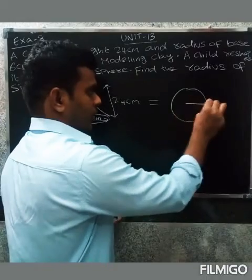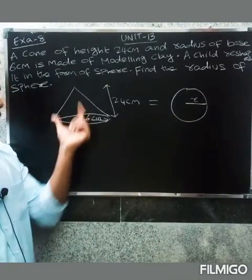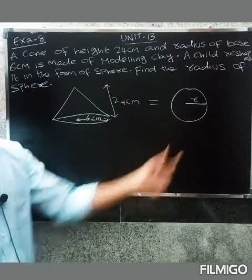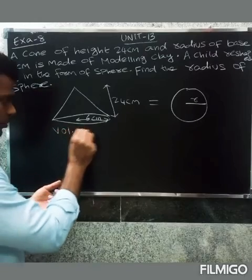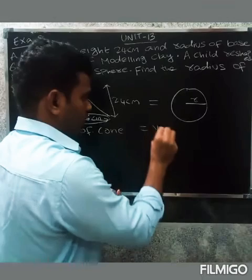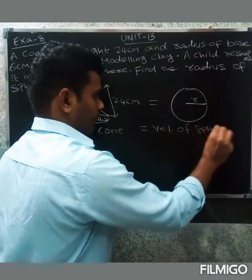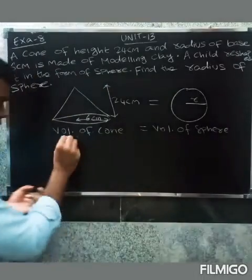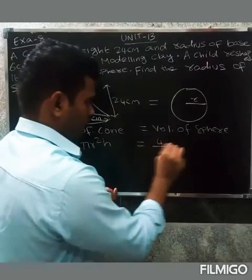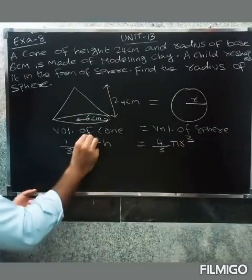Since the cone is reshaped into a sphere, the volume of the cone equals the volume of the sphere. So volume of cone equals volume of sphere: one-third pi r squared h equals four-thirds pi r cubed.